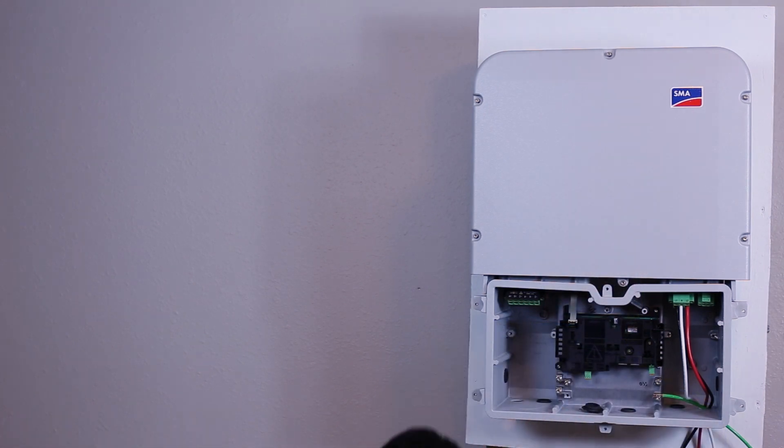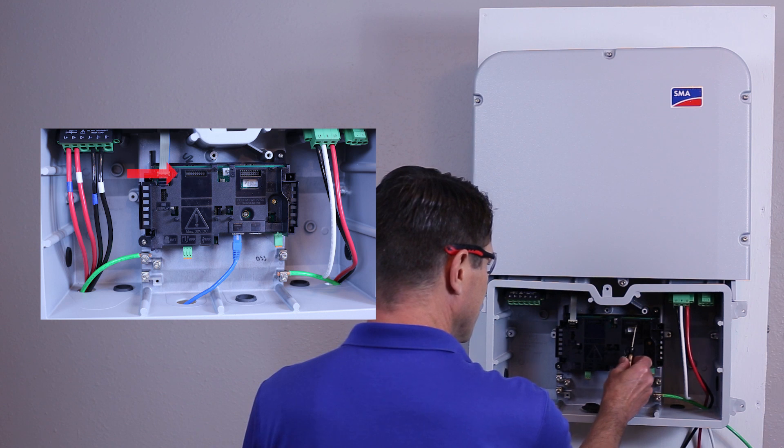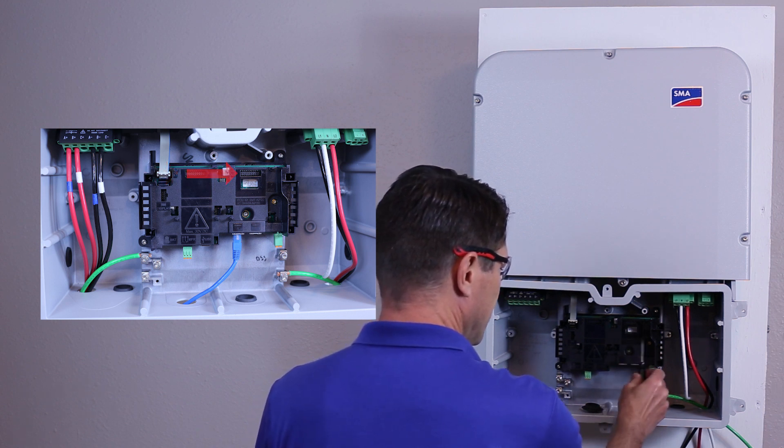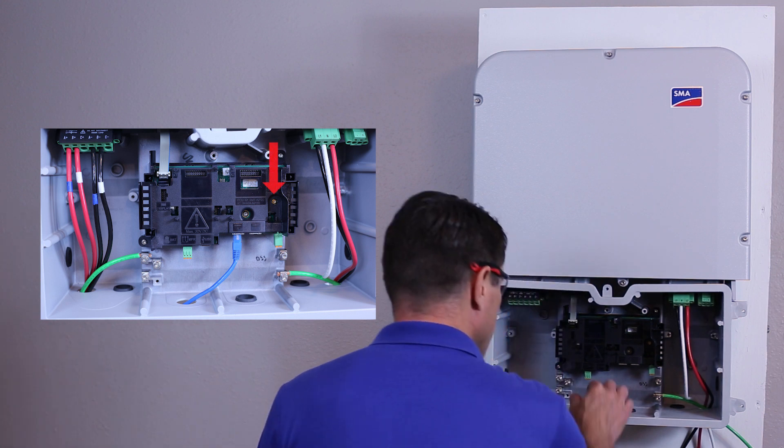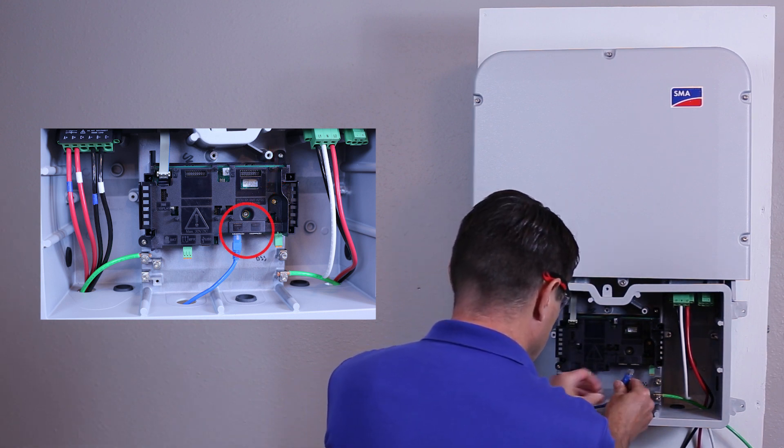Before connecting the DC conductors, any accessories or network cables should be installed. There are two module expansion slots on the communications board and the connector for the Wi-Fi extension antenna is on the right side of the communications board. There are two RJ45 jacks for wired ethernet communications as well.